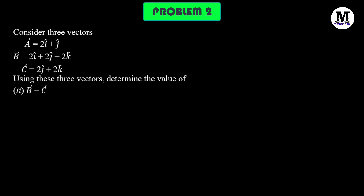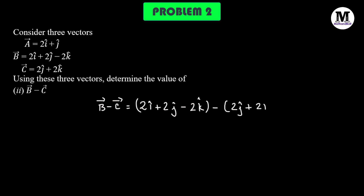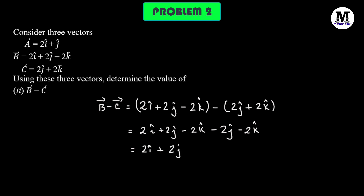Problem number 2: here we need to find B vector minus C vector. So, B vector will be 2i cap plus 2j cap minus 2k cap minus of 2j cap plus 2k cap. Getting rid of the parenthesis, we have 2i cap plus 2j cap minus 2k cap minus 2j cap minus 2k cap. Now we will combine the individual components. There is only a single i cap vector, so we have 2i cap, and finally we get 2i cap minus 4k cap. The j cap component has cancelled out.